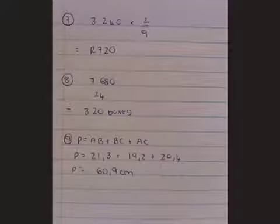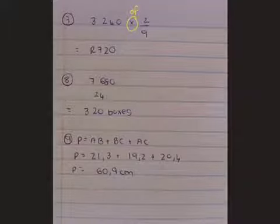Then for questions 7, 8, and 9, there were some more wordy problems. Mandela promised to give his mother two-ninths of his salary to help with the monthly costs. If he earns 3,240 rand per month, how much does he give her? Now the word 'of' in maths means times. So two-ninths of 3,240 means you are multiplying the fraction by the number, which is 720 rand.